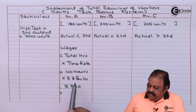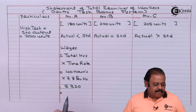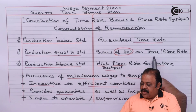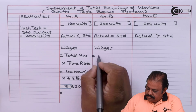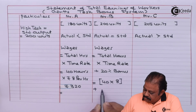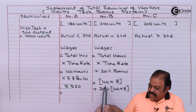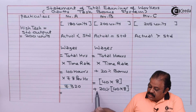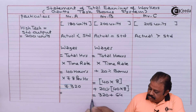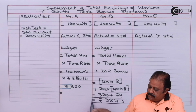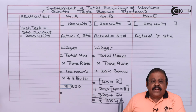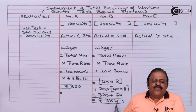In case of B, actual output is equal to standard output, so a bonus of 20% on time rate applies. Wages = total hours 40 × time rate rupees 8 per hour, plus 20% of 40 × 8. So Mr. B, with actual output equal to standard, including the 20% bonus, will be getting rupees 384.